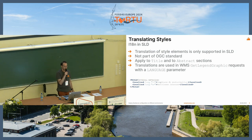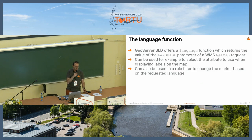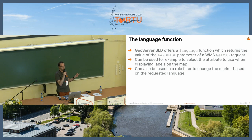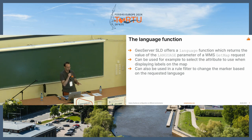This is not part of the OGC standard; it is something specific to GeoServer. It works for title and abstract sections and uses the GetLegendGraphic request when you provide a language parameter. There is also a language function in SLD that can be used to get the language parameter of the request. You can use it to select the right attribute in your data to display on the map, and also use it in a rule filter when you want to change the marker, for example.